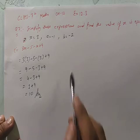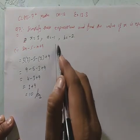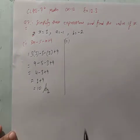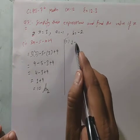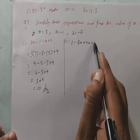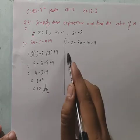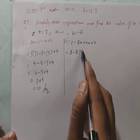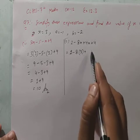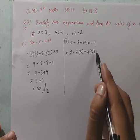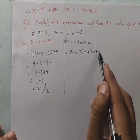Second part: 2 minus 8x plus 4x plus 4. इसमें x की जगे bracket लगाकर 3 रखेंगे। तो यह हो जाएगा: 2 minus 8×(3) plus 4×(3) plus 4.